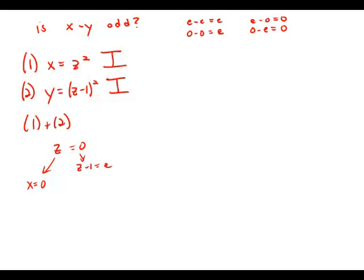And when we square z minus one, we'll get another even number. So it means that y is an even number. So in this case, x and y would have opposite polarities. And so the answer to the question would be yes.